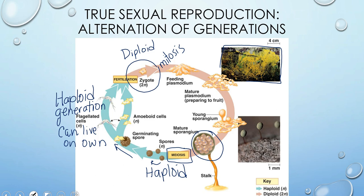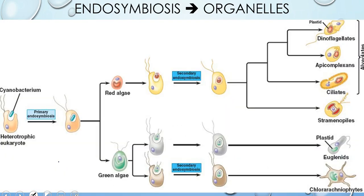When these two types of haploid cells join together, we have fertilization and we go back to our diploid zygote. The reason this is called alternation of generations is because we alternate between a diploid generation and a haploid generation. We see this not just in slime molds, but also in things like seaweeds. We also see this alternation of generations in things like mosses and ferns.